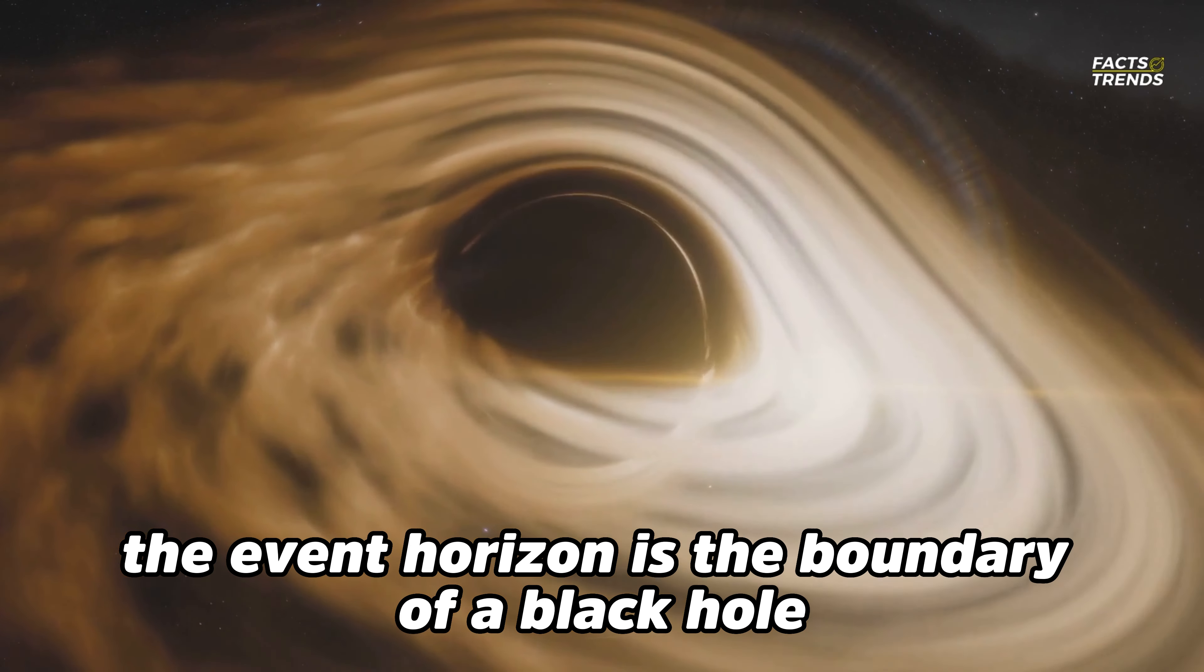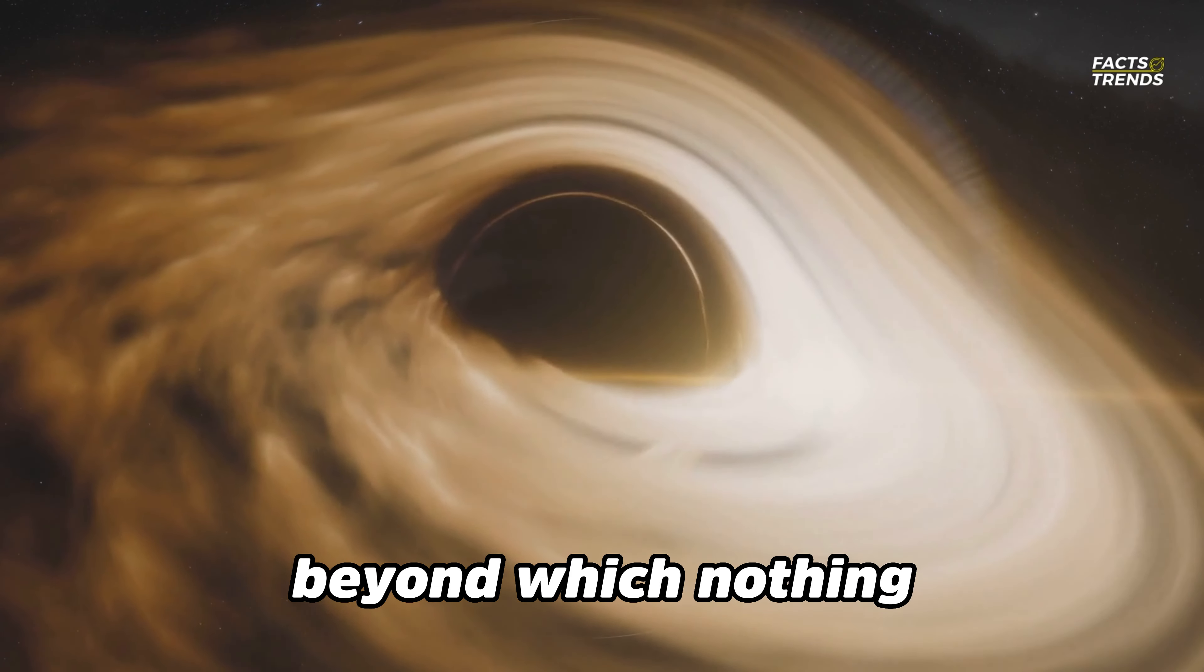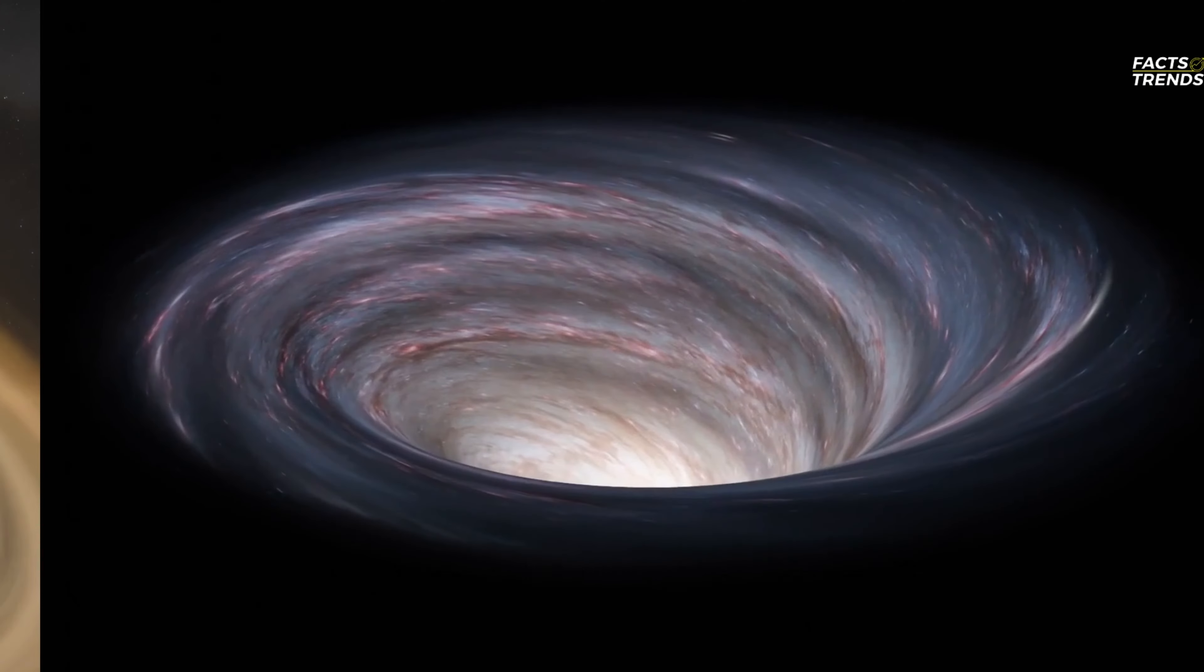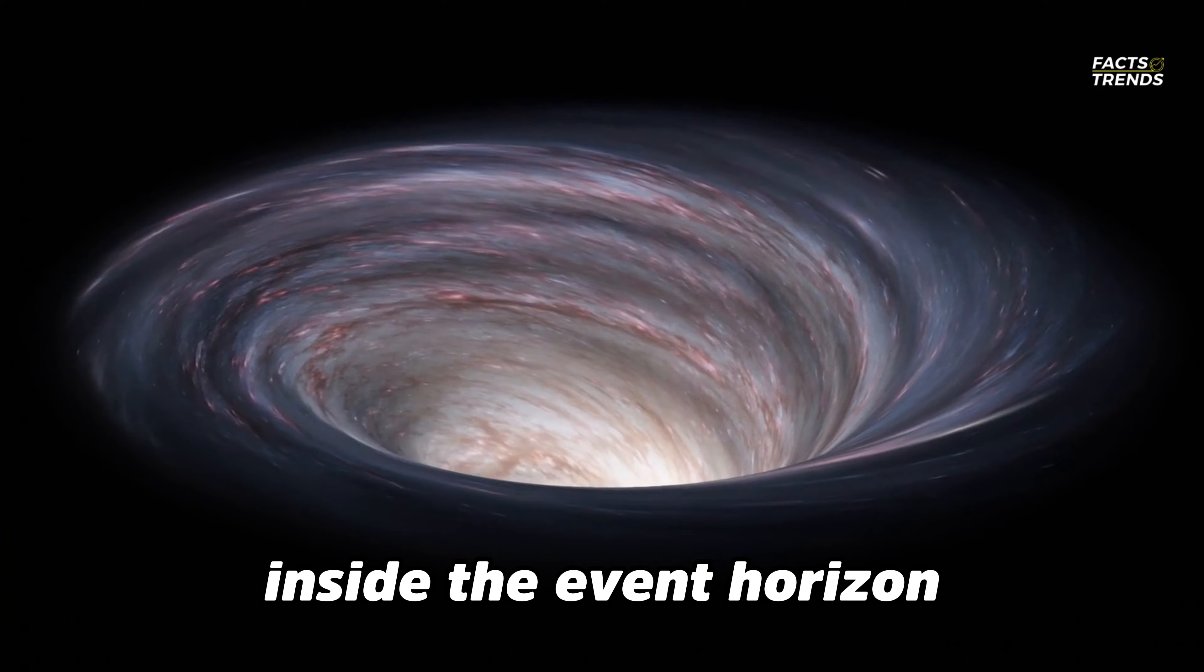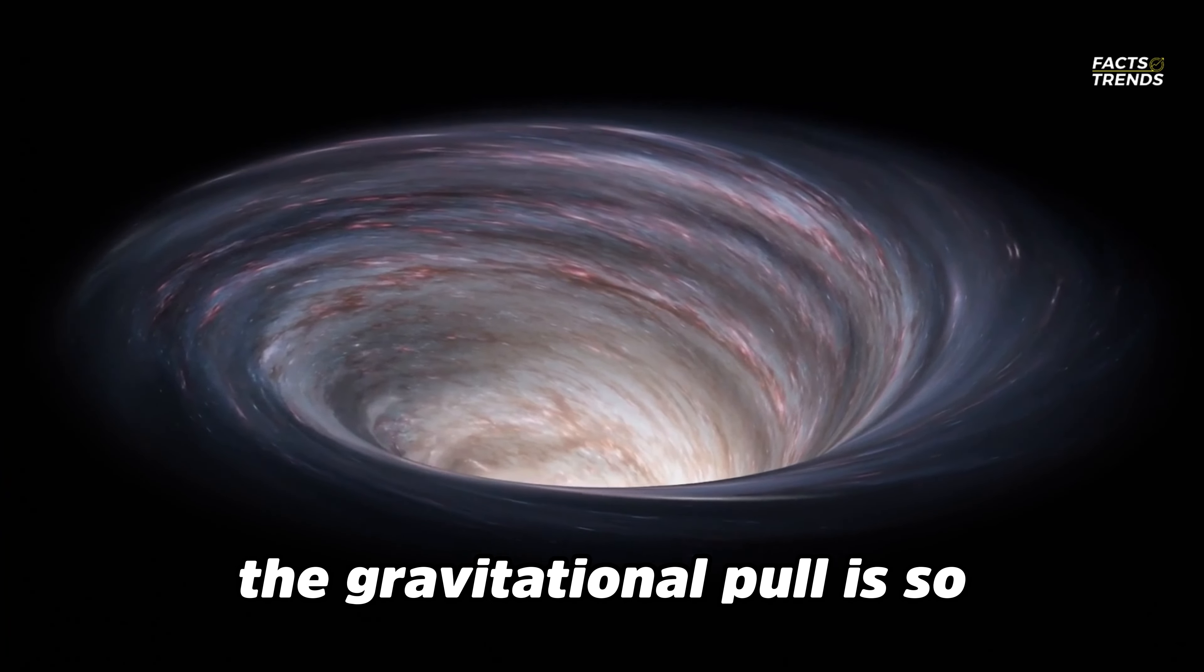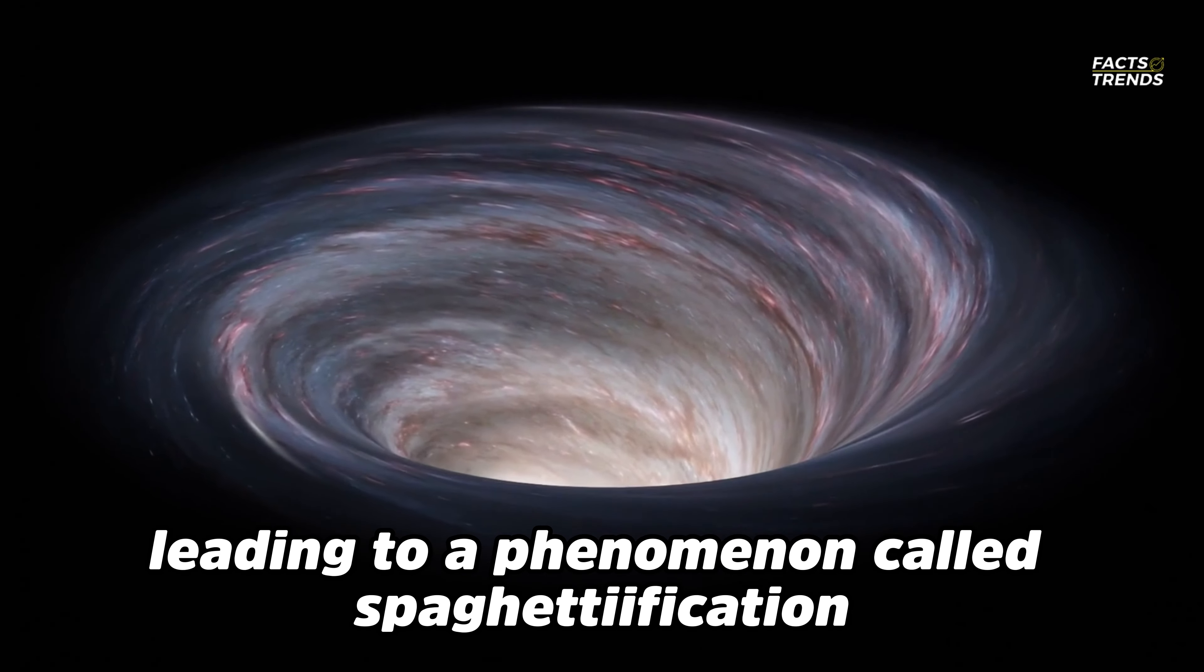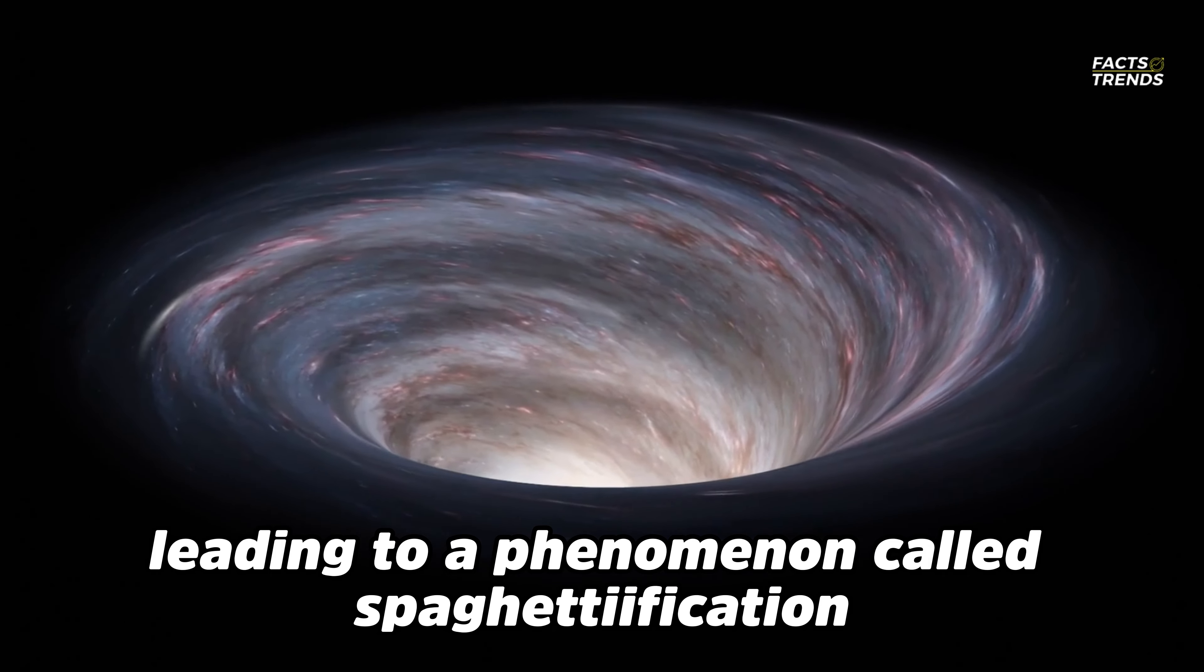The event horizon is the boundary of a black hole, beyond which nothing, not even light, can escape. Inside the event horizon, the gravitational pull is so strong that it distorts space and time, leading to a phenomenon called spaghettification.